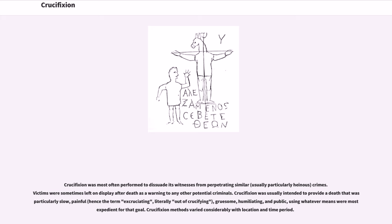Crucifixion was most often performed to dissuade its witnesses from perpetrating similar, usually particularly heinous, crimes. Victims were sometimes left on display after death as a warning to other potential criminals. Crucifixion was usually intended to provide a death that was particularly slow, painful — hence the term excruciating, literally meaning out of crucifying — gruesome, humiliating, and public, using whatever means were most expedient for that goal.